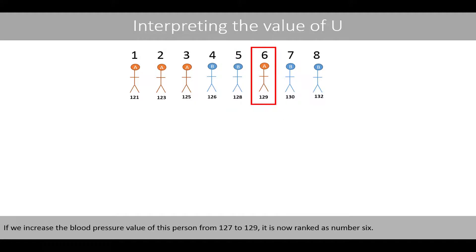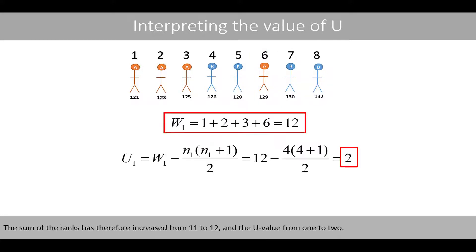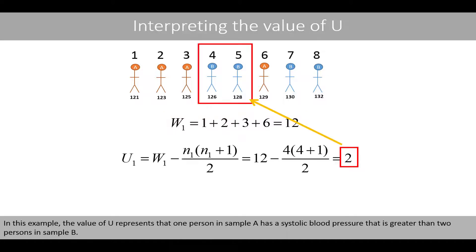If we increase the blood pressure value of this person from 127 to 129, it is now ranked as number 6. The sum of the ranks has therefore increased from 11 to 12, and the U-value from 1 to 2. In this example, the value of U represents that one person in sample A has a systolic blood pressure that is greater than two persons in sample B.